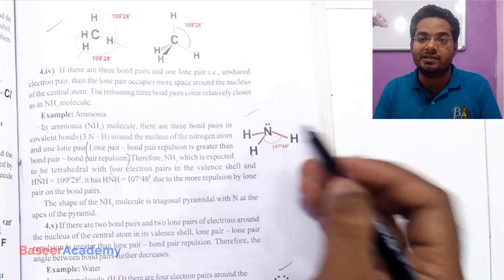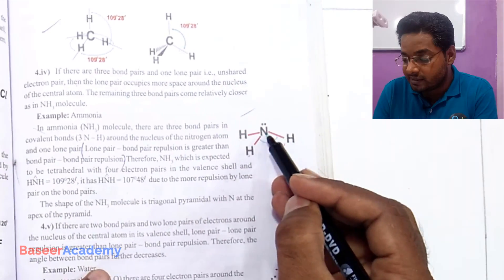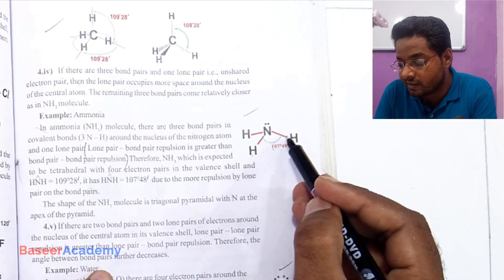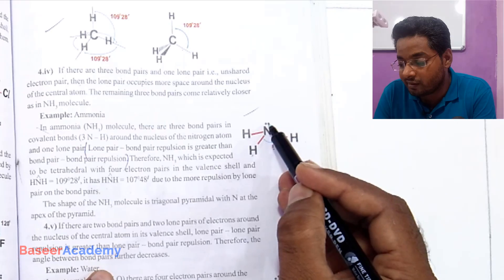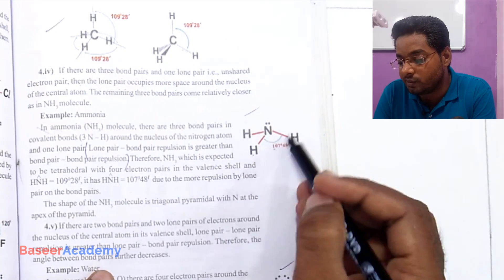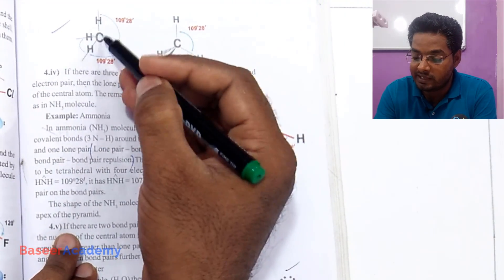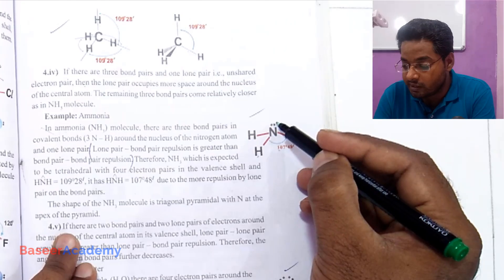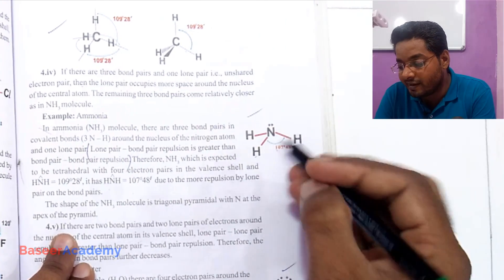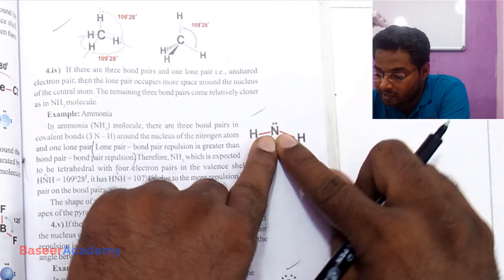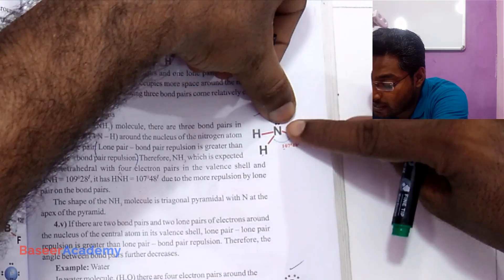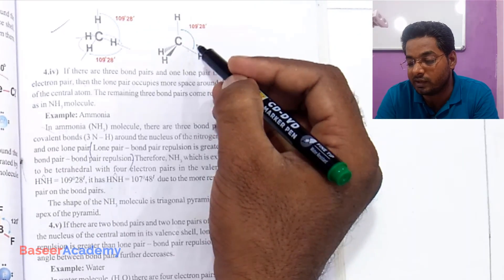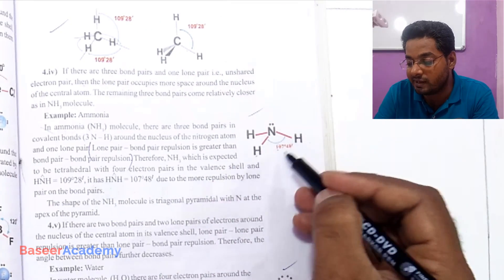In ammonia, the central atom has three bond pairs and one lone pair. Three bond pairs give six electrons, and the lone pair adds two more — eight electrons total — so the bond angle should be 109°28'. But because the central atom has a lone pair, the repulsion between the lone pair and the bond pairs is greater than bond pair–bond pair repulsion, causing the angle to decrease from 109°28' to 107°48'.